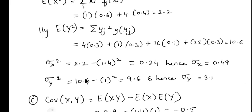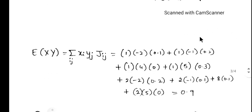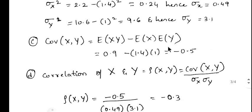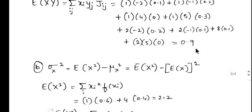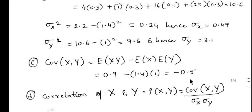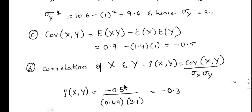Similarly for y: E(y squared) = (minus 2 squared)(0.3) + (minus 1 squared)(0.3) + (4 squared)(0.1) + (5 squared)(0.3) = 10.6. Then sigma_y squared = E(y squared) minus [E(y)] squared = 10.6 minus 1 squared = 9.6, so sigma_y = square root of 9.6 = 3.1. Now covariance of x, y = E(xy) minus E(x) times E(y) = 0.9 minus (1.4)(1) = minus 0.5.